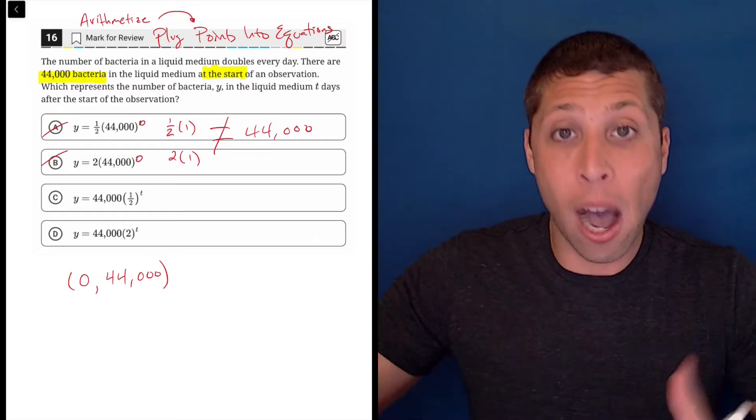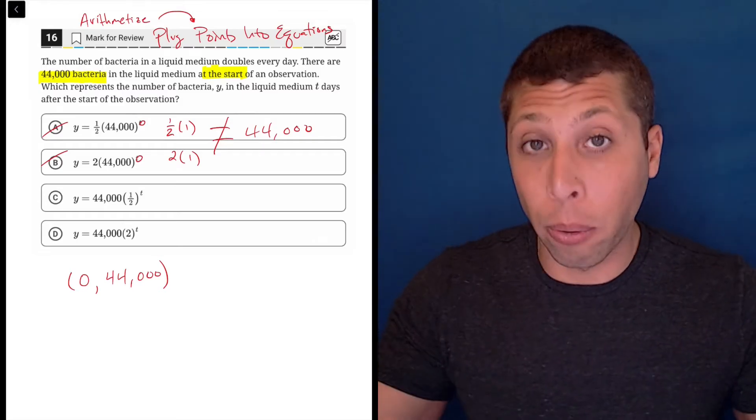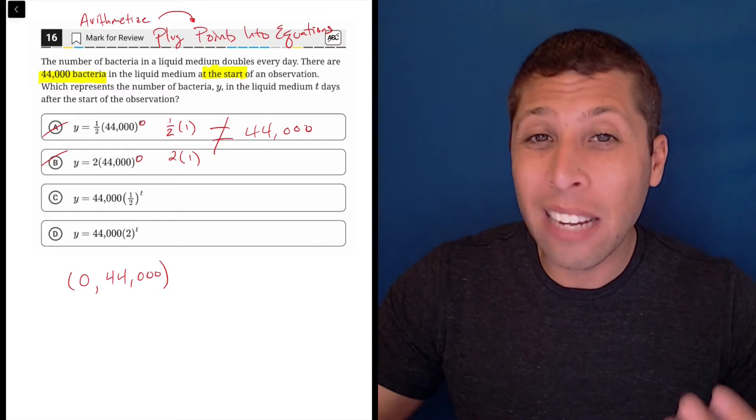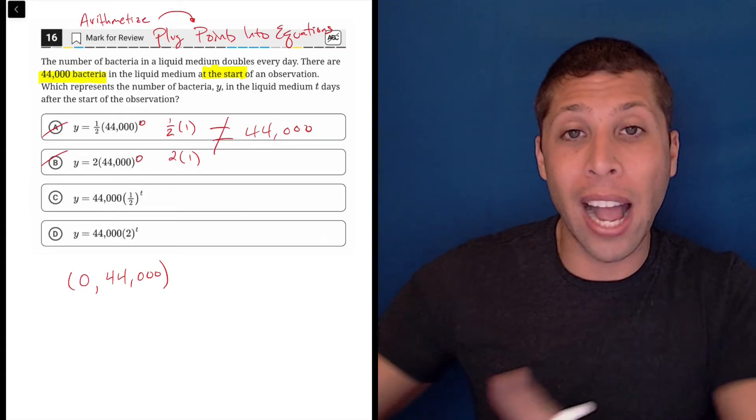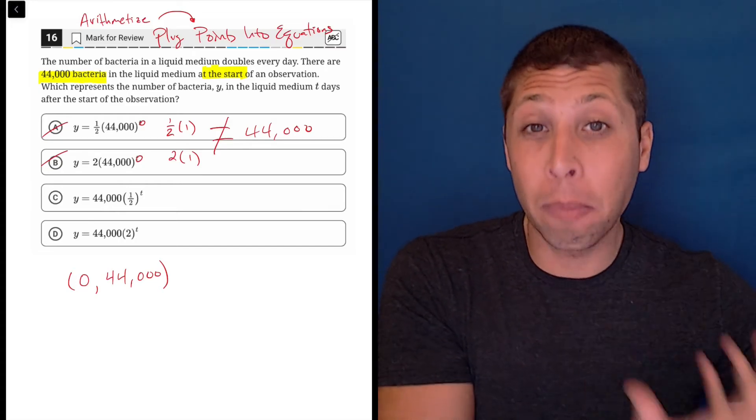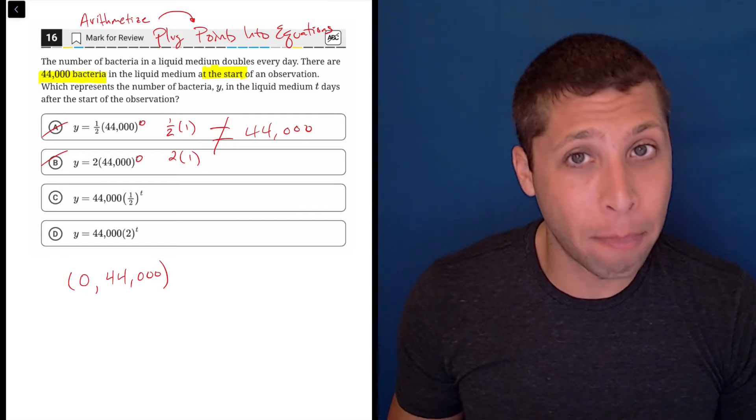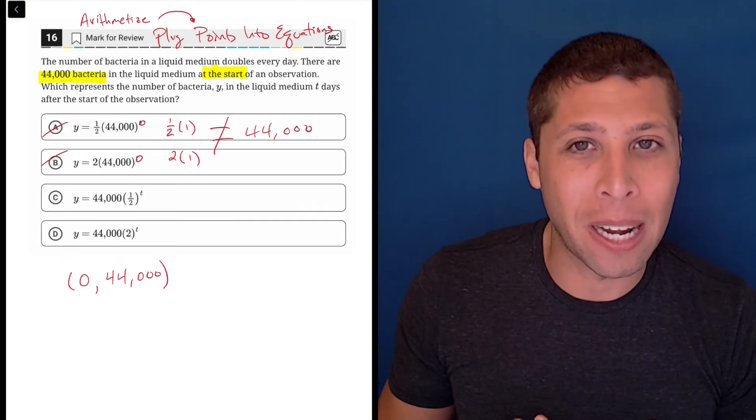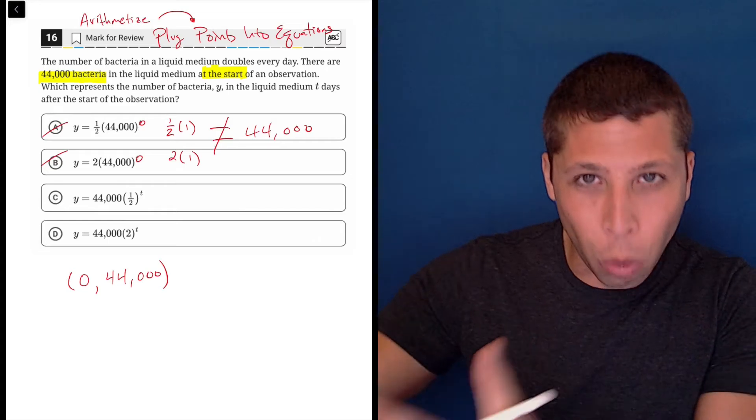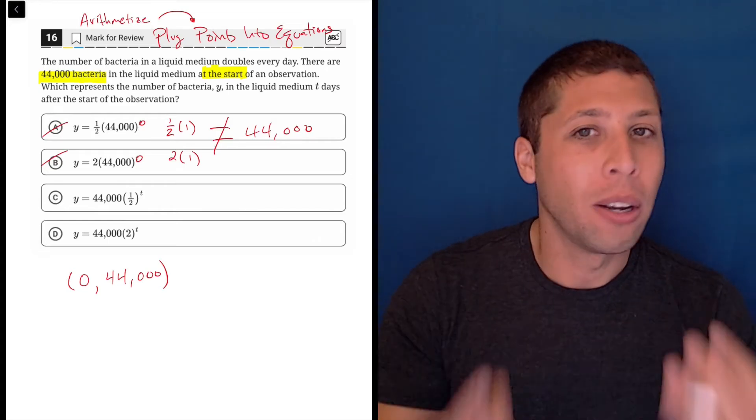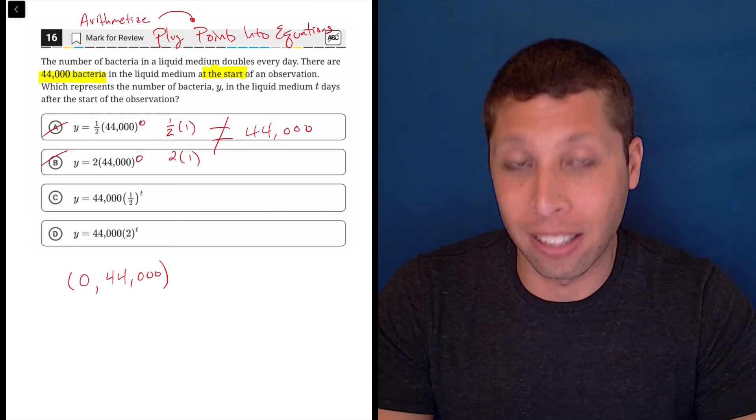So this is how plug points into equations works. We take a point, we put it into an equation, we see if it produces the result that we want. If we put in a number for X, we should get out the number we expect for Y. That's not happening here. It doesn't matter that we had to make up the points. It's still how the story describes what's happening. So it's a valid way to think about this and to test those equations.